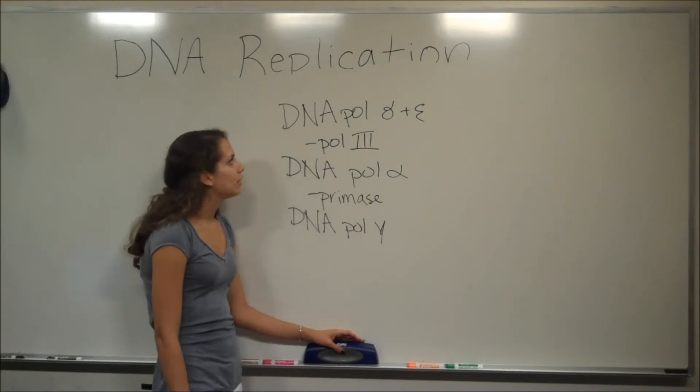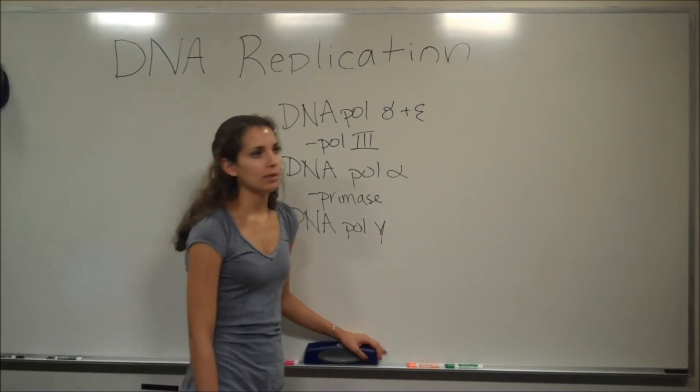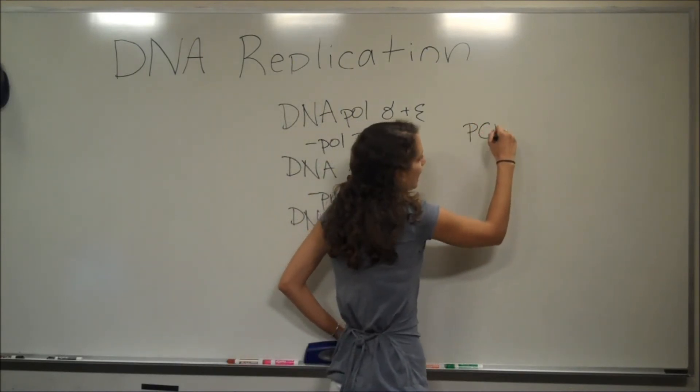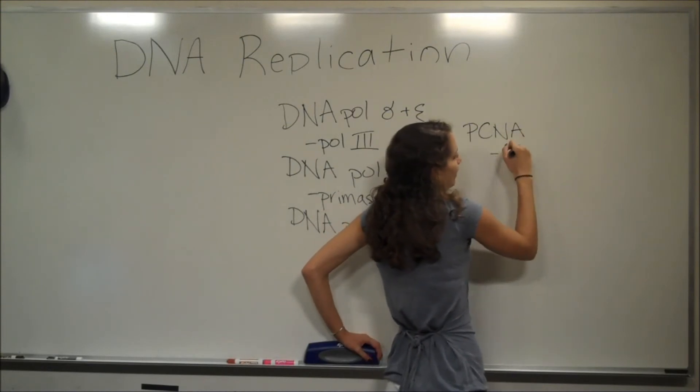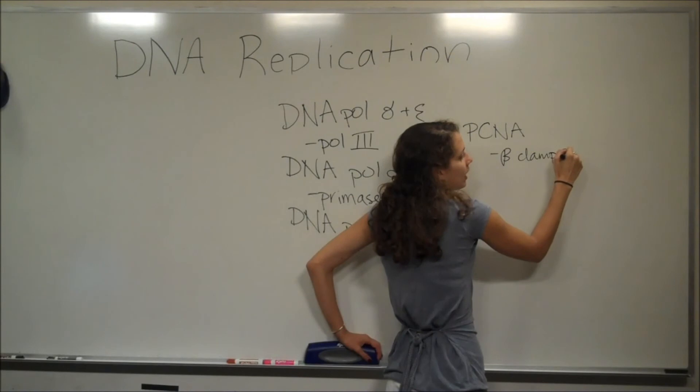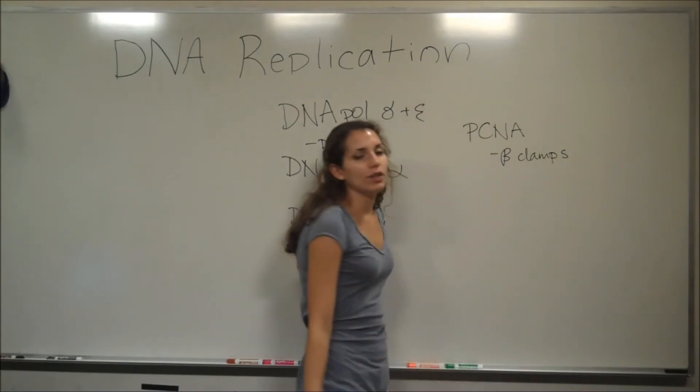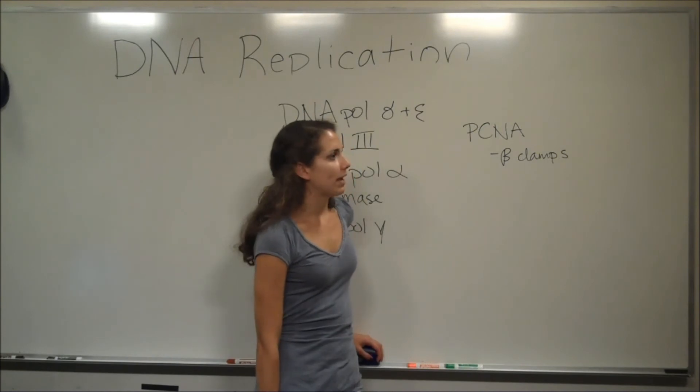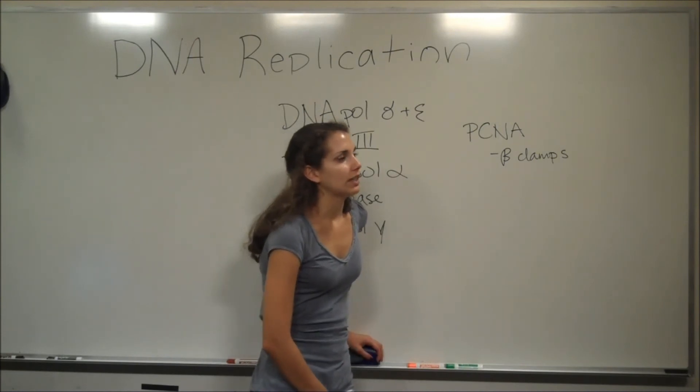Another difference between eukaryotes and prokaryotes is eukaryotes have PCNA that act instead of beta clamps. And I didn't really talk about beta clamps, but they're associated with polymerase activity. So the DNA molecules pass through the beta clamps as they're being replicated in prokaryotes, and eukaryotes' PCNA performs this function.